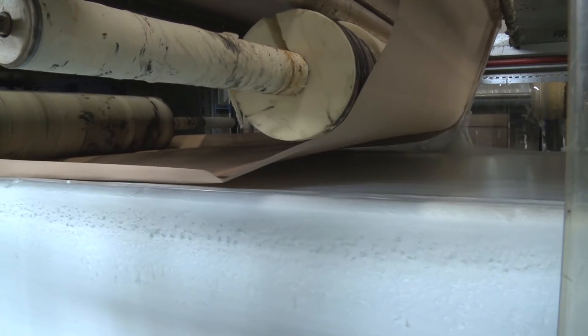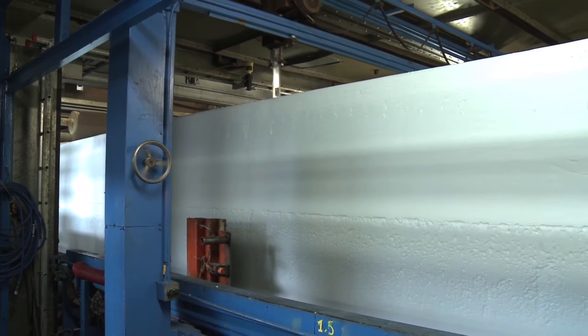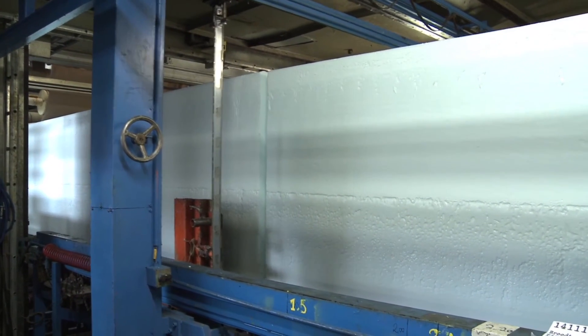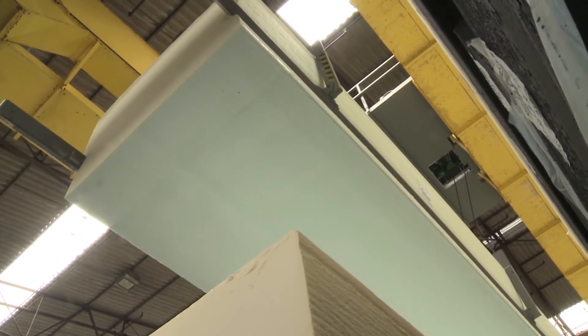And because the foam production is a continuous process, any foam block being produced on the conveyor belt could, in theory, be endless. However, to make the conversion of foam in later stages easier, the long continuous block is cut into sections of up to 120 metres in length.